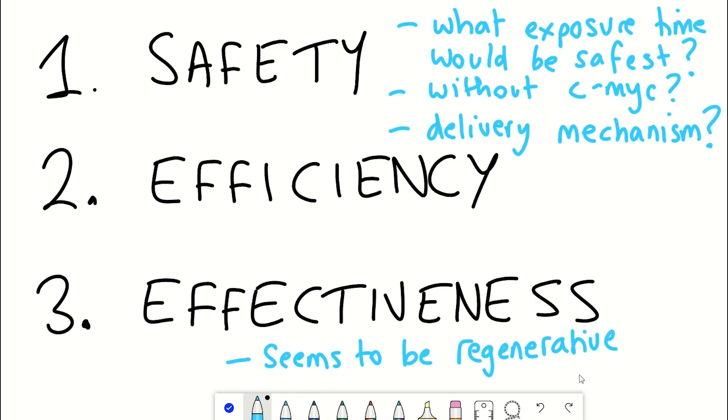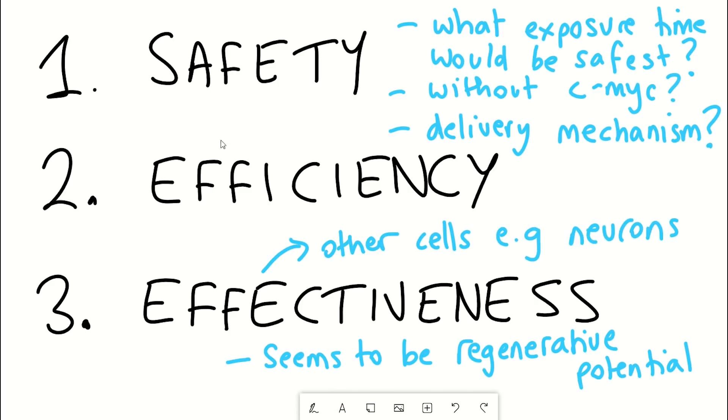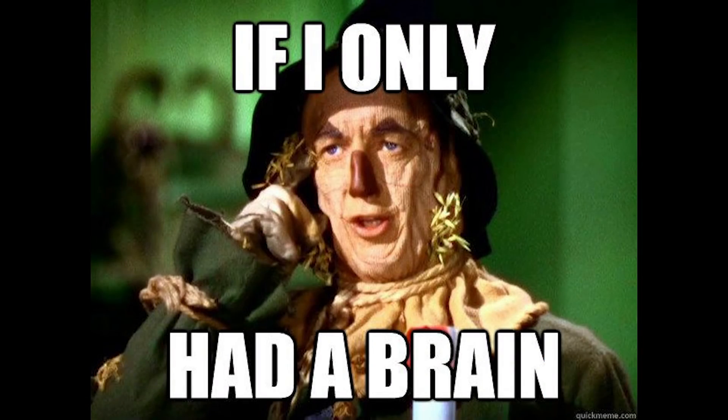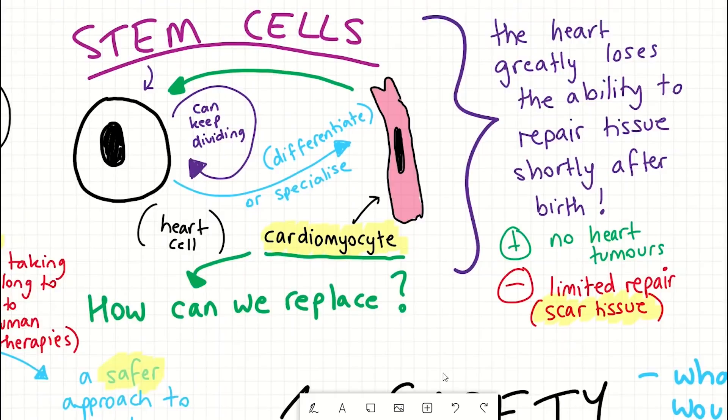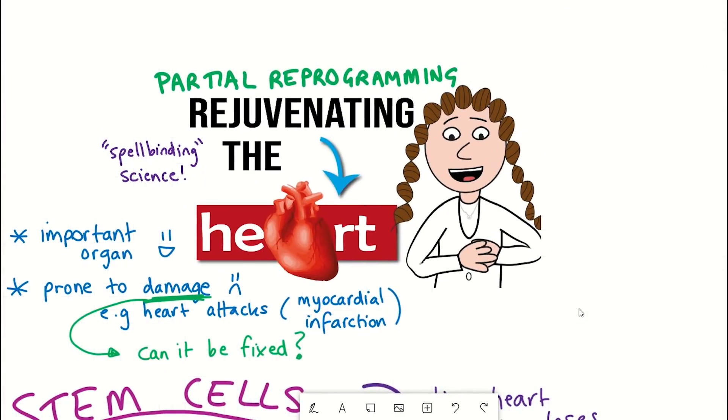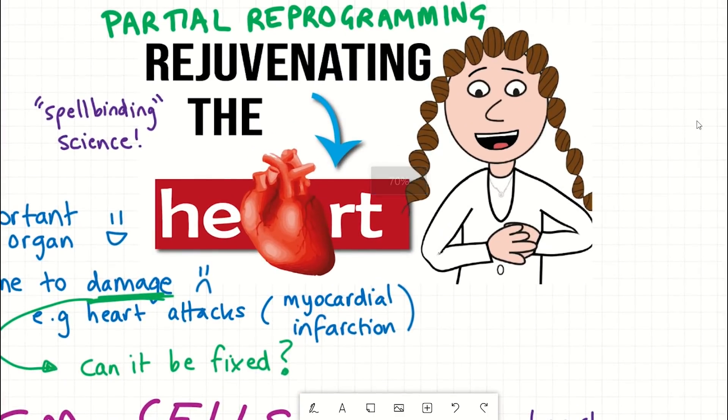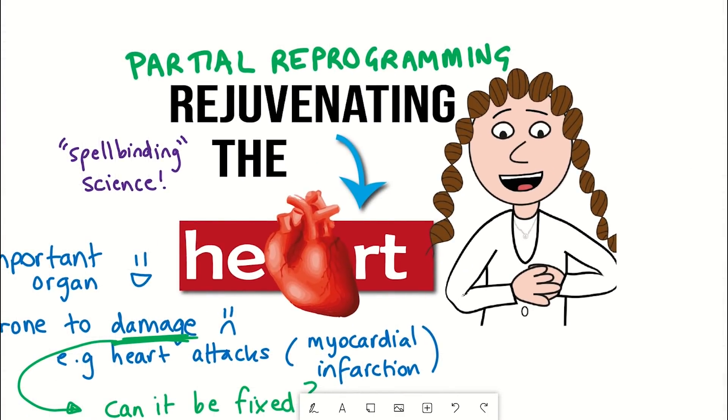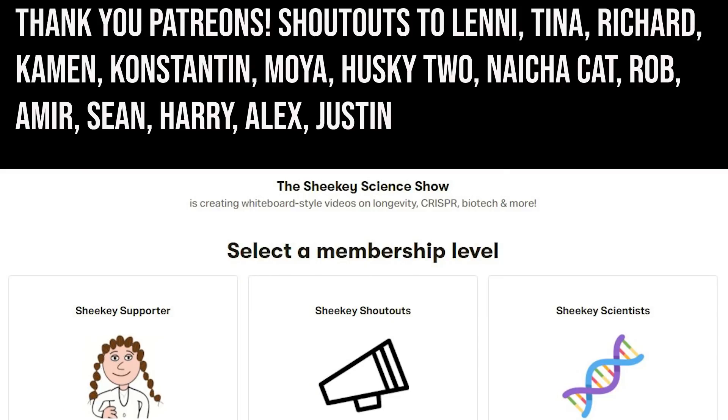And lastly, it raises the question of whether partial reprogramming could cause de-differentiation of other post-mitotic cells such as maybe neurons. And so maybe in another video we can help out the scarecrow with his brain. Anyway, I hope you've enjoyed this video. Leave a comment, always keen to hear your thoughts and if I like it, I may even give it a heart. Anyway, that's all for this video. Thank you to my Patreon supporters and thank you for listening.